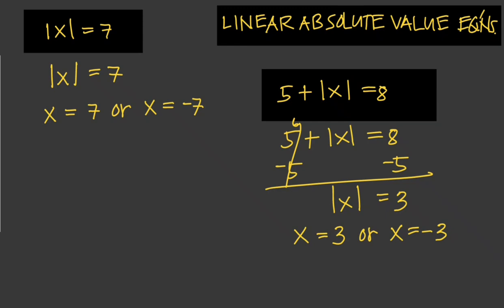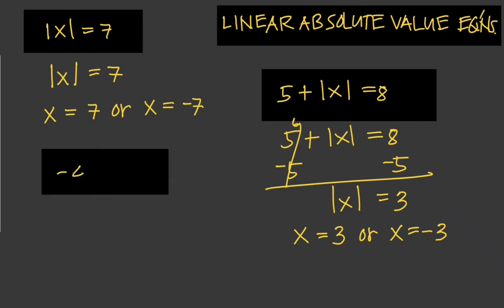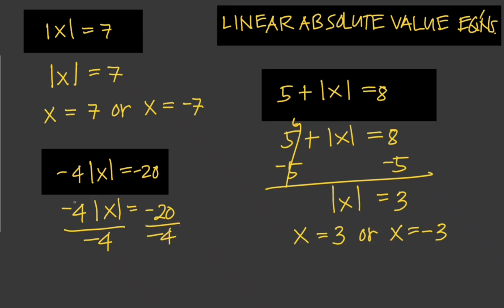Take note that we never combine what is inside the absolute value with what is outside the absolute value. For example, if we're given negative 4 times the absolute value of x equals negative 20, we don't distribute negative 4 to x because x is inside the absolute value symbol. All we have to do is divide both sides by negative 4. That cancels out, so we are left with absolute value of x equals 5. The value of x could either be positive 5 or x equals negative 5.